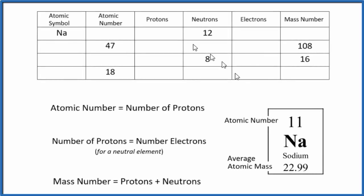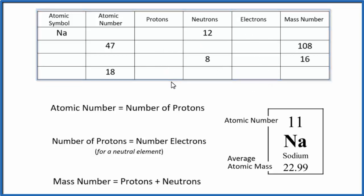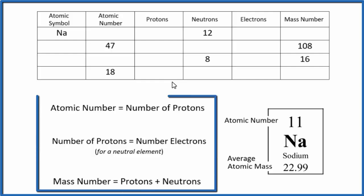In chemistry, you're often asked to find the number of protons, neutrons, and electrons for an atom. Many times you'll be asked to fill a table out like this, or given a test question based on this type of information in the table. In this video, we'll look at the rules and the definitions that allow you to complete this table and answer these types of questions.